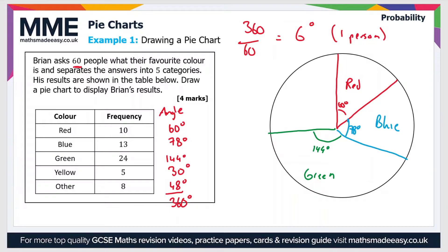And then the yellow category. So that has an angle of 30 degrees. So it should be about half the size of the red one. So 30 degrees there. That's obviously yellow.